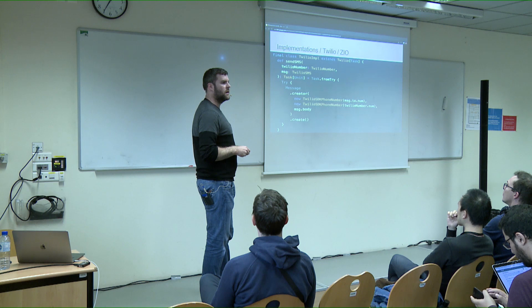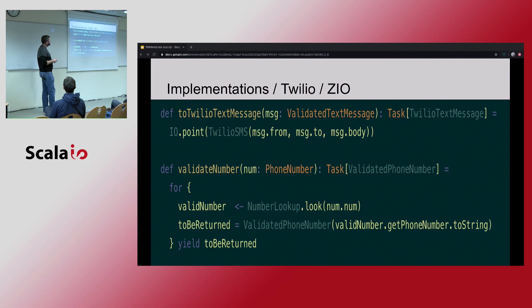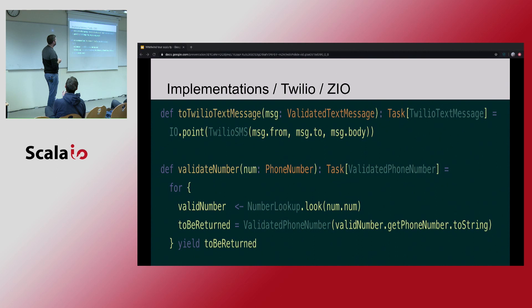We have the other two methods to implement. validateNumber talks to the Twilio API via a helper object that returns a Task, which lets us use it in a for comprehension. Once we know the number is valid, we turn it into a validated phone number object and return it. The toTwilioTextMessage helper is actually pure and referentially transparent, but since everything around it is a Task, we can use IO.point - or task.point - to lift a pure value into the context of IO, similar to Future.successful.